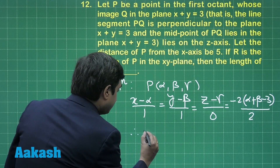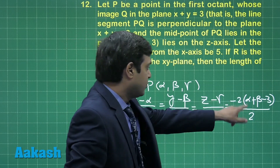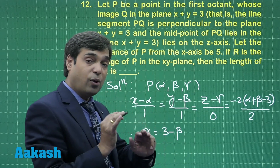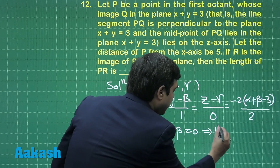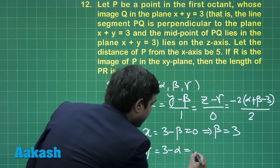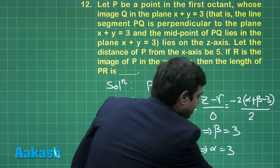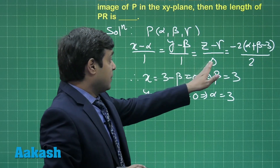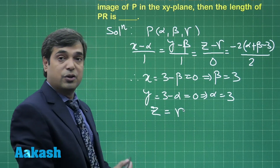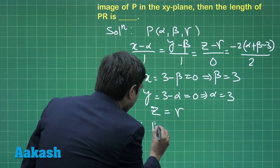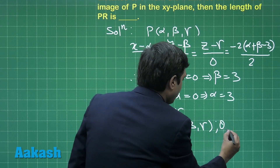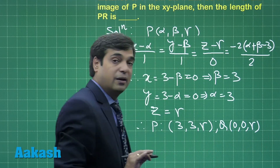This gives x = 3 − β. Since the point is lying on the z-axis, this equals 0, meaning β = 3. Then y = 3 − α, which is also 0, so α = 3. Since the denominator for z is 0, z is simply γ. So now we have point P as (3, 3, γ) and point Q as (0, 0, γ).